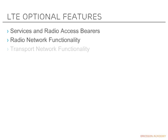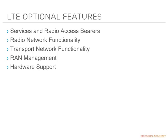We also have transport network functionality — an example being clock source over NTP. RAN management — an example is automatic neighbor relations, which I'll come back to a little later. Hardware support — examples include tower mounted amplifiers and remote antenna tilt support. And the last group is observability functionality — an example being PM initiated UE measurements.